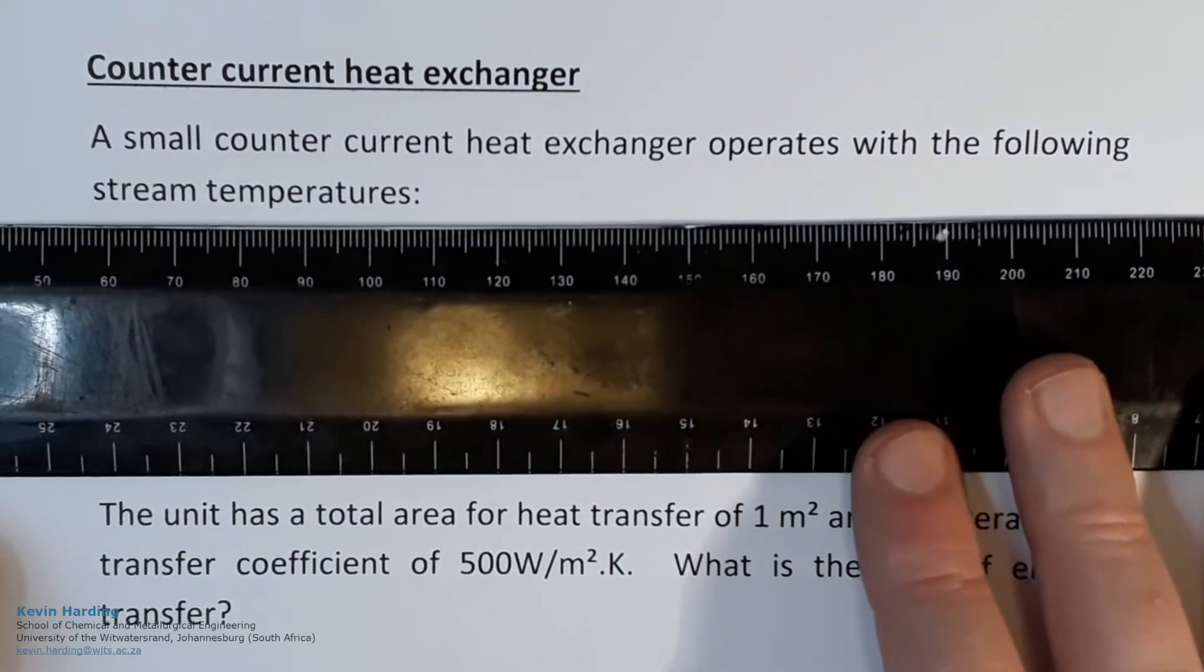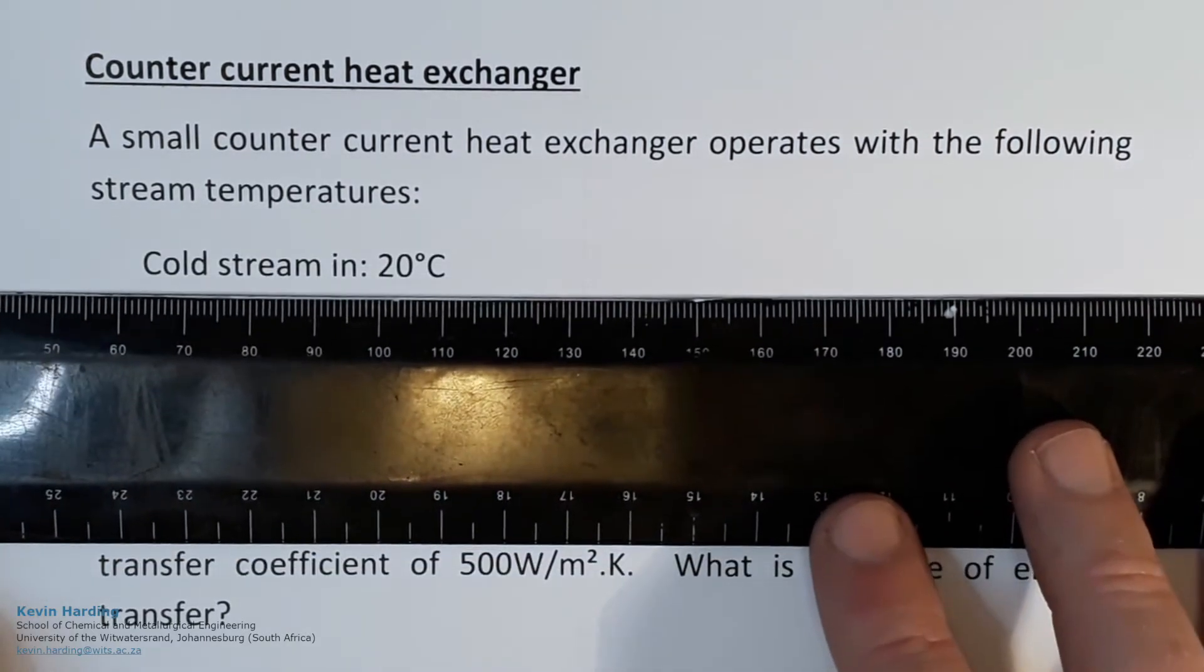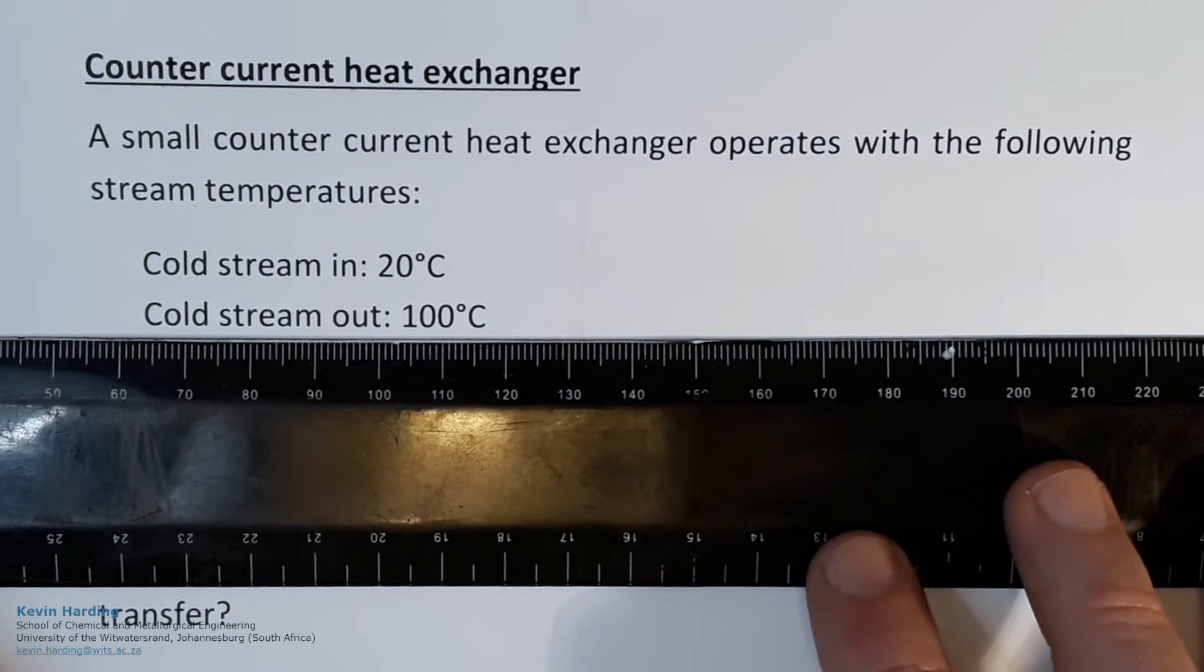A small counter-current heat exchanger operates with the following stream temperatures. Cold stream in and cold stream out: 20 and 100 degrees Celsius respectively.